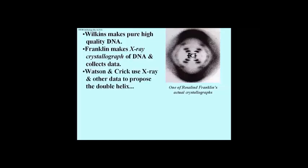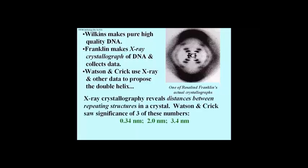Watson and Crick used the data from the X-ray crystallograph to propose the double helix. X-ray crystallography reveals the distances between repeating structures in a crystal. Rosalind Franklin reported three numbers: 0.34 nanometers, 2 nanometers, and 3.4 nanometers.